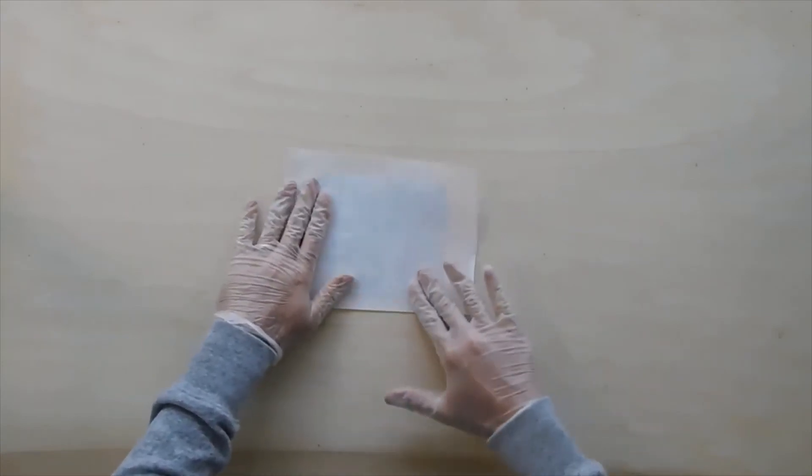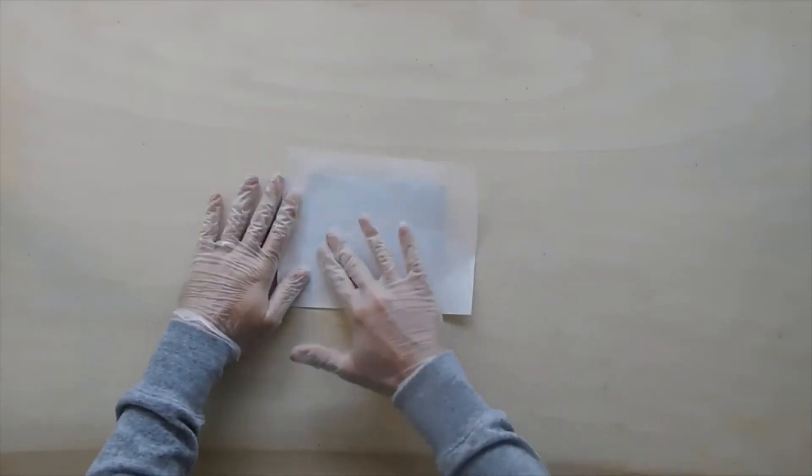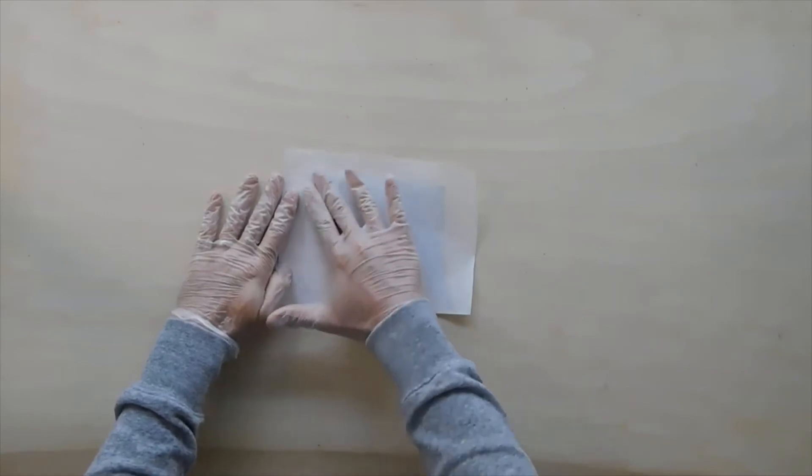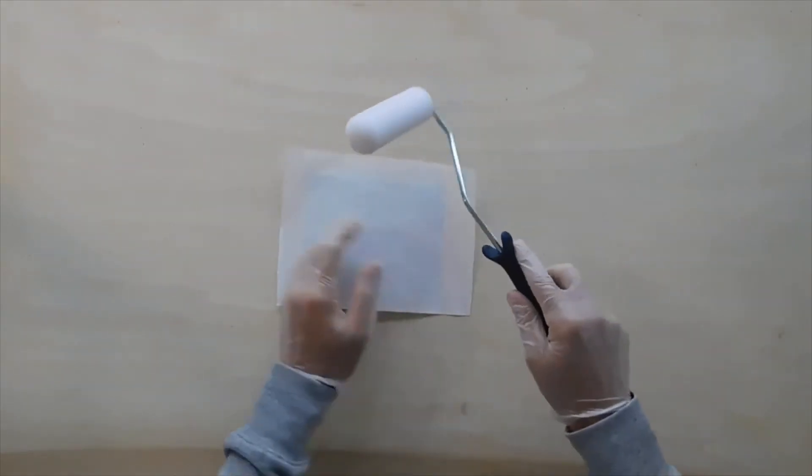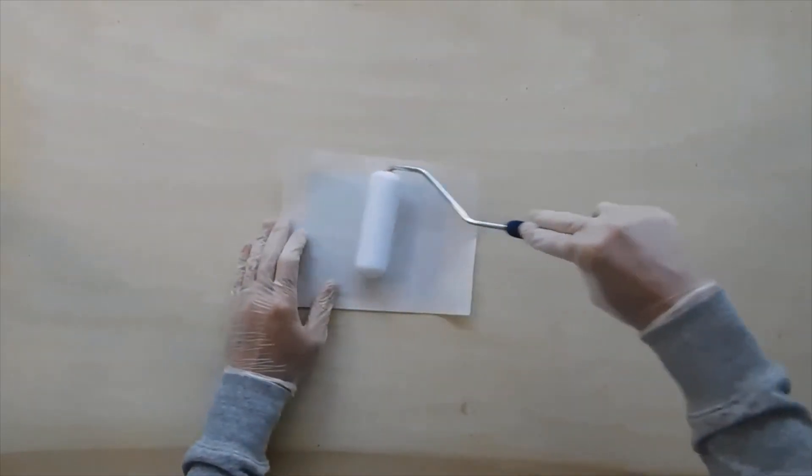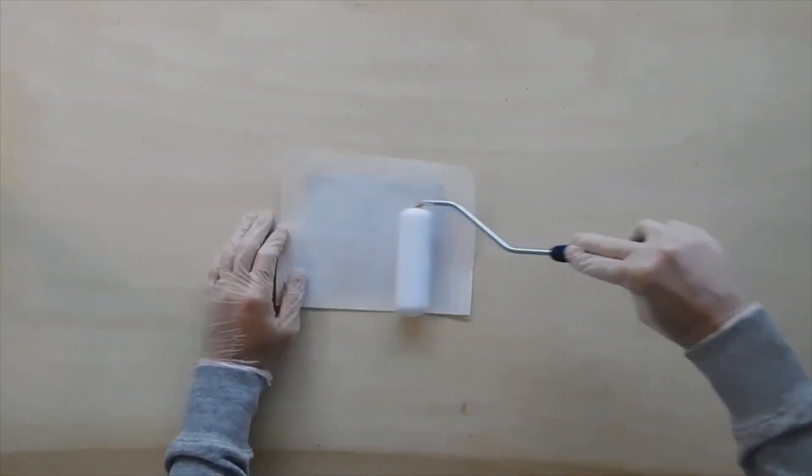In this video, I will be applying a silicone release liner to the spur so that I can apply the substrate at a later date. Place the silicone release liner over the PSA and apply even pressure. Make sure the siliconized side of the release liner is facing the adhesive.